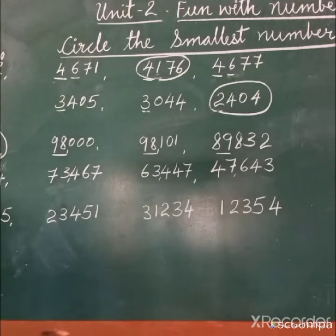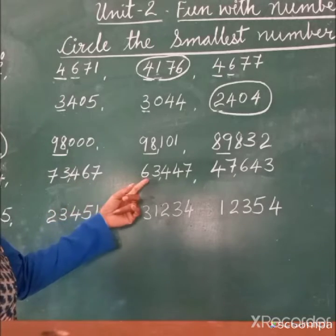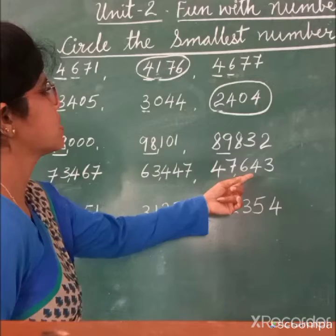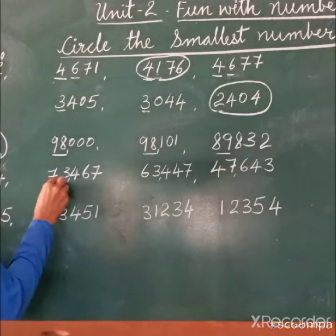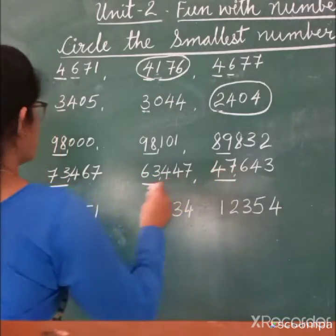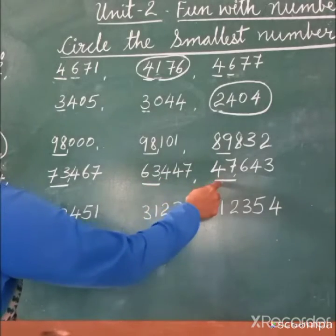Then question number 3. 47634, 73457, 63447, 47643. Now we have to see here. Here it is 47, here it is 73, here it is 63, here it is 47. So if we have to see the bigger number, then 47000.